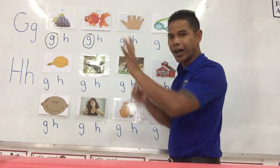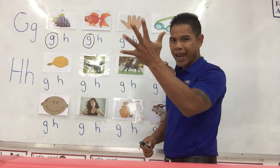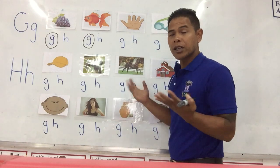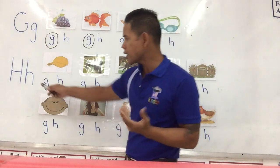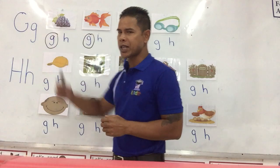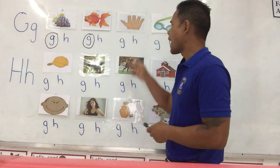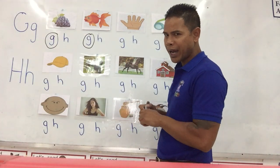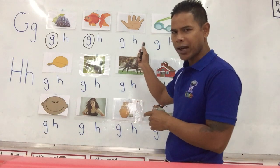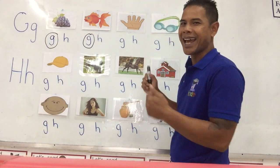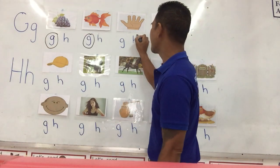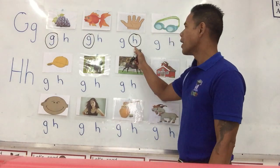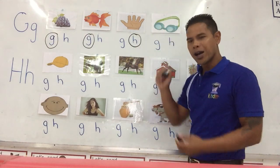Next one — hand. Hand. What letter do you hear? Do you hear the huh sound or the guh sound? Hand. Huh. Hand. Which one — letter G or letter H? Excellent job. Is it letter H? H for hand. Huh. Hand.